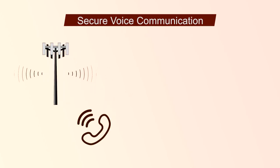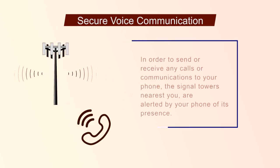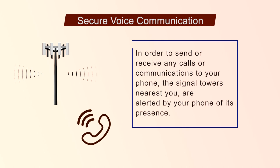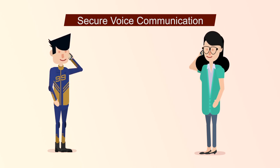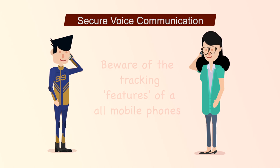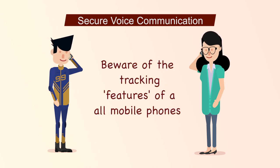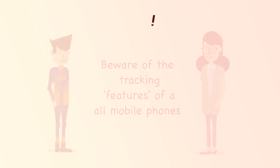In order to send or receive any calls or communication to your phone, the signal towers nearest to you are alerted by the phone of its presence. As a result of these alerts and communications, the network service provider knows the precise geographic location of your mobile phone at any given time. If you are conducting sensitive phone conversations or sending sensitive SMS messages and wish to maintain anonymity, beware of the above tracking features of all mobile phones.